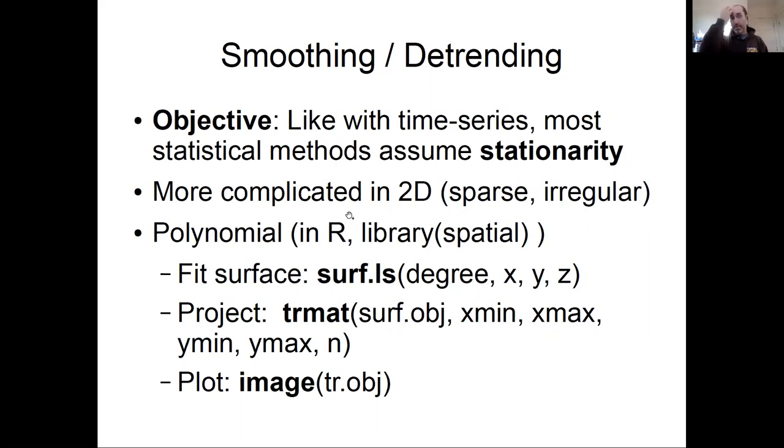You can still do things like running a moving average through data, but you have to do it in space across two dimensions instead of one. The other thing that's often more complicated in space is that there's a greater tendency for spatial data to be sparse and irregular than with time series data.